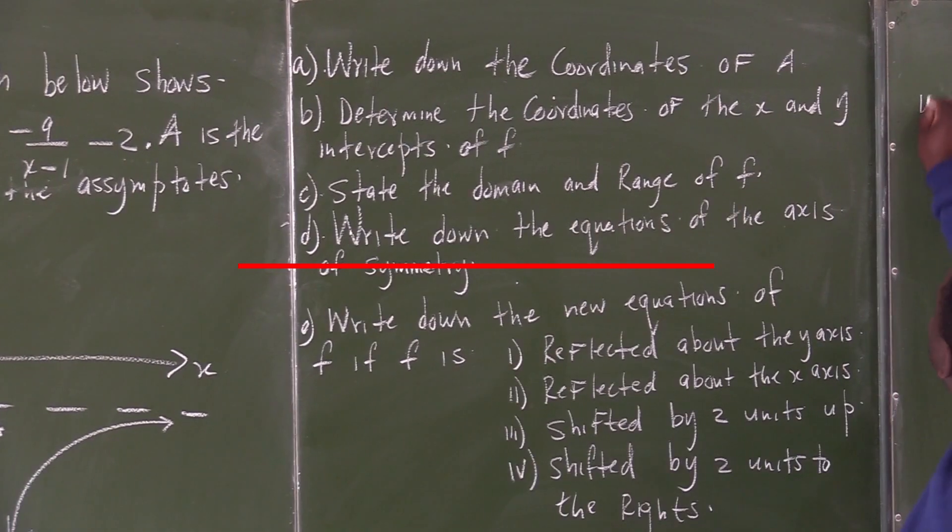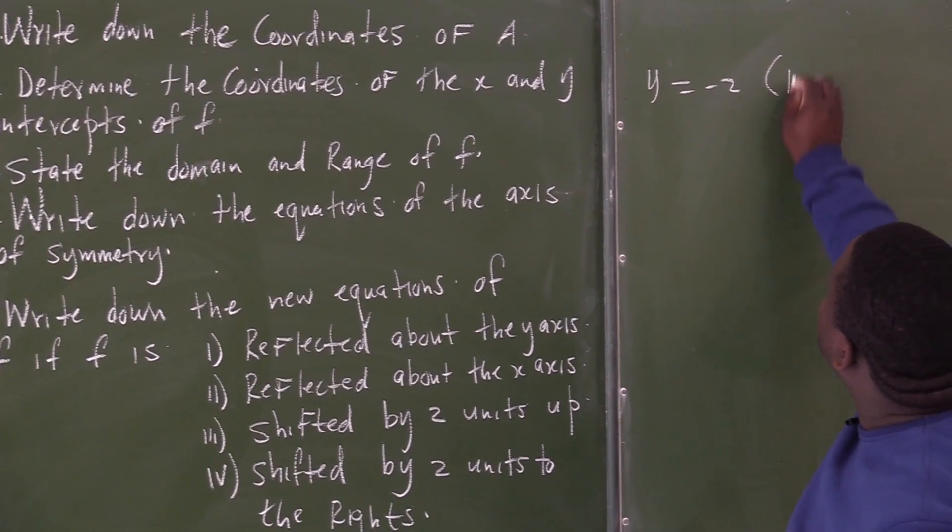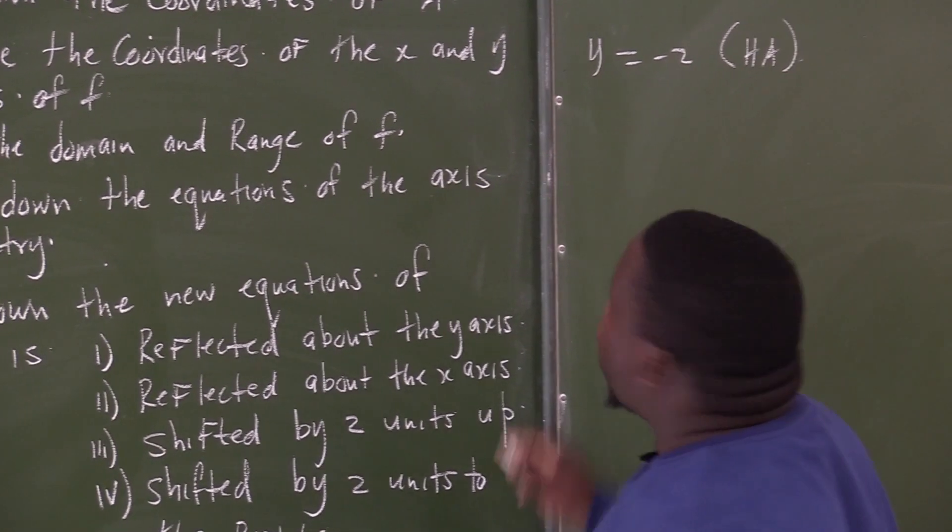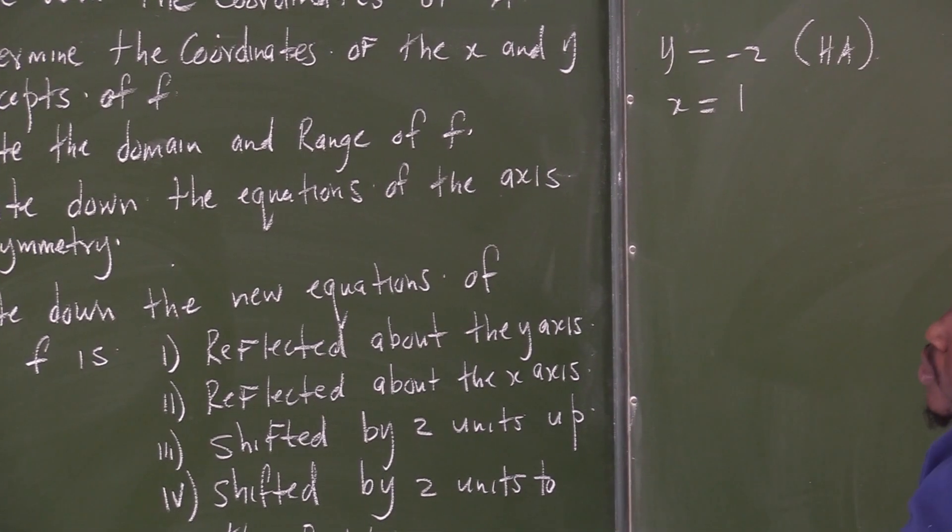We will have y equal to negative 2. What is this negative 2? This negative 2 is our horizontal asymptote. We also have x equals to positive 1, the vertical asymptote.